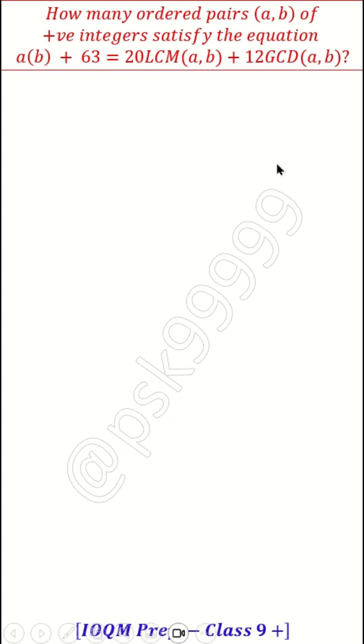How many ordered pairs (a, b) of positive integers satisfy the equation a(b) + 63 = 20LCM(a, b) + 12GCD(a, b)?